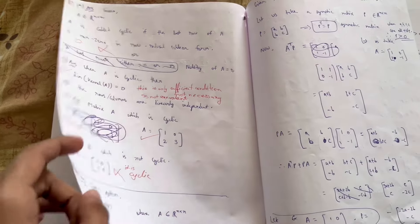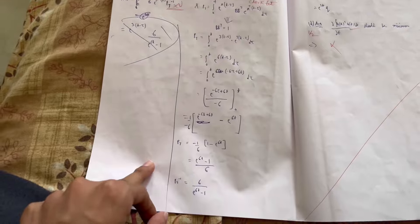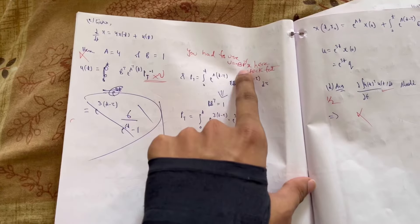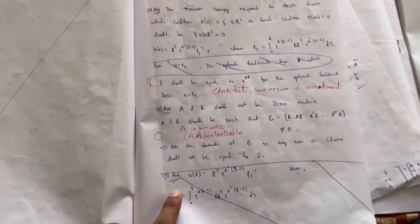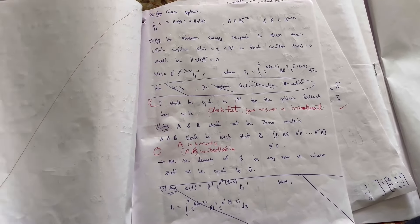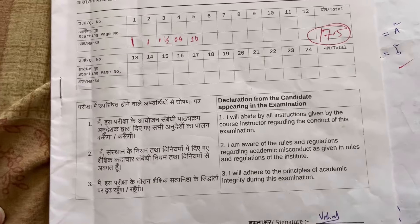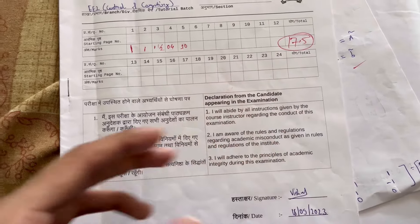इसमें जो मेरा मार्क है वो है 17.5 out of 50, और average गया था इसमें 20. (My marks in this subject are 17.5 out of 50, and the average was 20.)